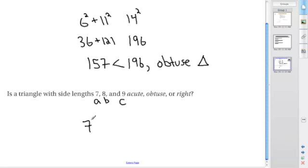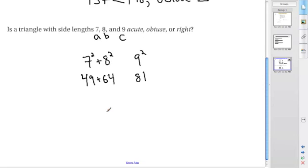Now we do 7² + 8² versus 9² and evaluate. 49 + 64 equals 113, which is greater than 81. Since it's greater than, we have an acute triangle.